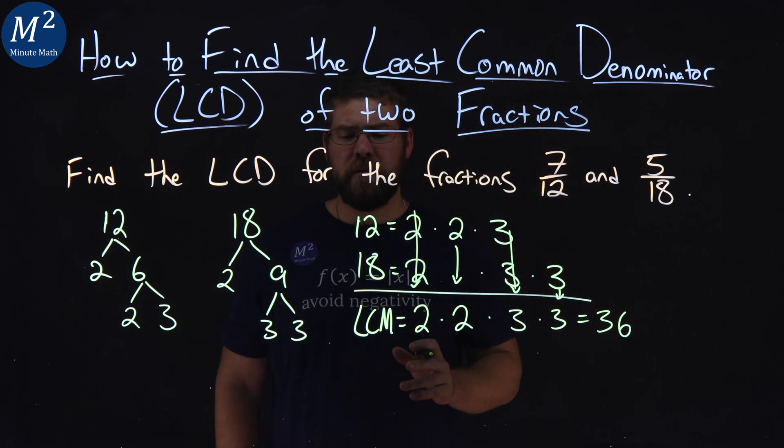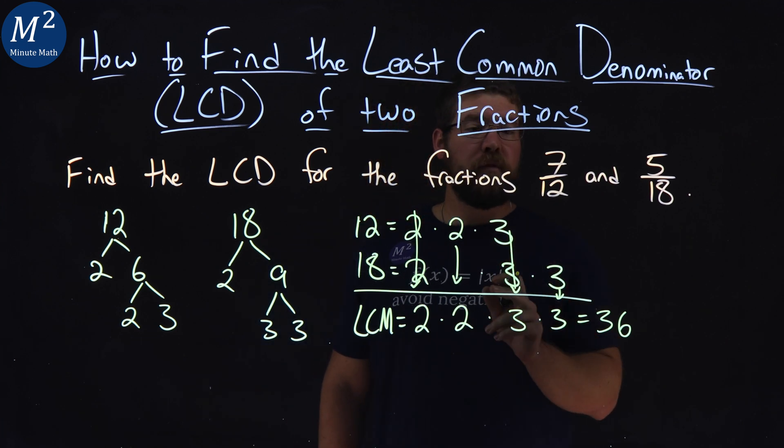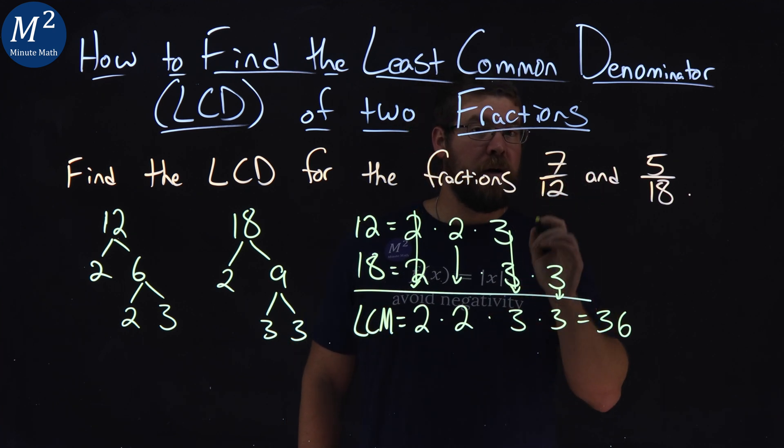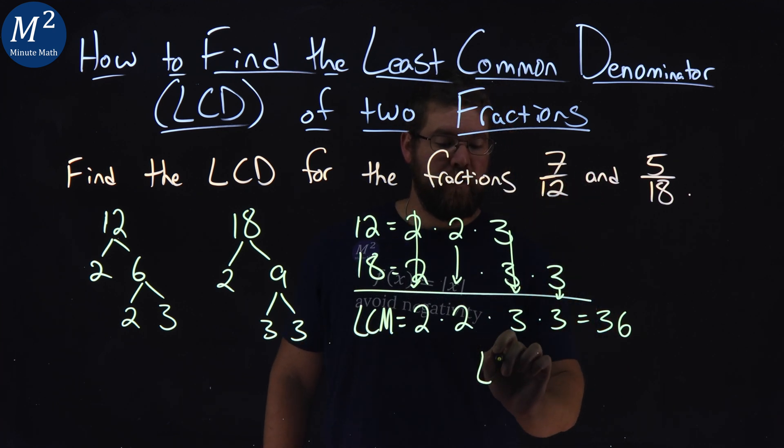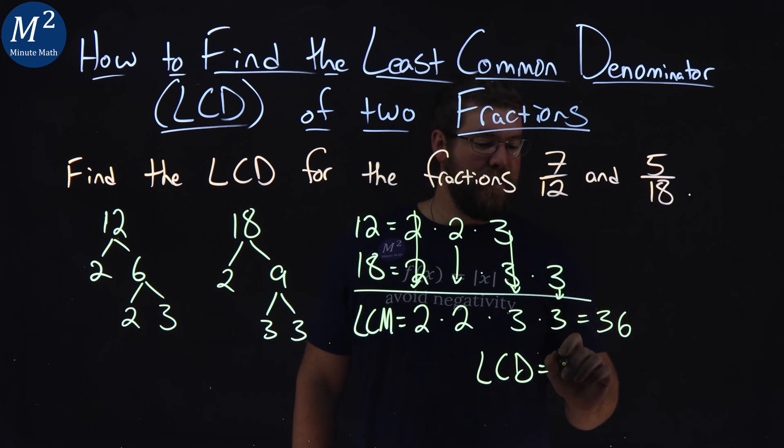But we have to find the least common denominator, not the least common multiple. Well, the least common multiple of the denominators of each fraction, we would call the least common denominator of the two fractions. So the LCD of 7 twelfths and 5 eighteenths is 36.